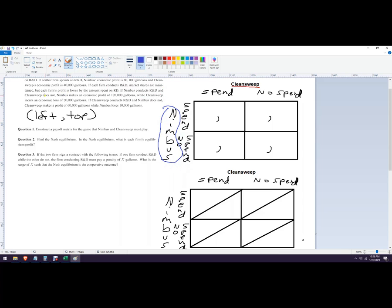So, it says each firm conducts R&D, then each profit is maintained, but each firm's profit is lower by the amount spent on R&D. If Nimbus conducts R&D but Clean Sweep does not, Nimbus makes an economic profit of 120 gallons, while Clean Sweep has a loss of 20,000 gallons. So that would be Nimbus spends, so that would be right here, and then Clean Sweep does not. So Nimbus would be plus 120,000 and then Clean Sweep would be negative 20,000.